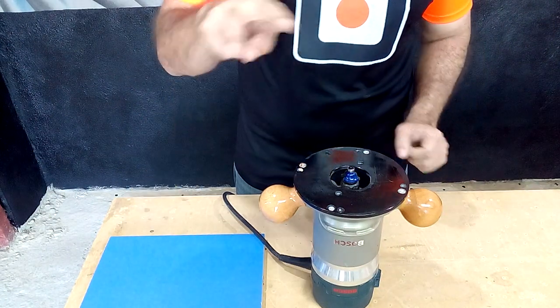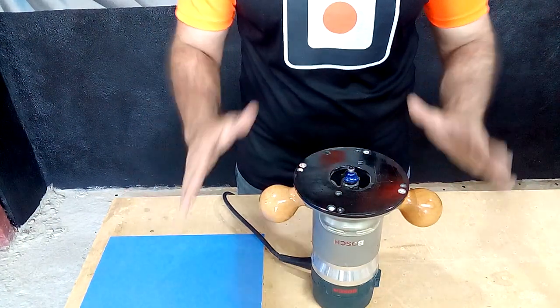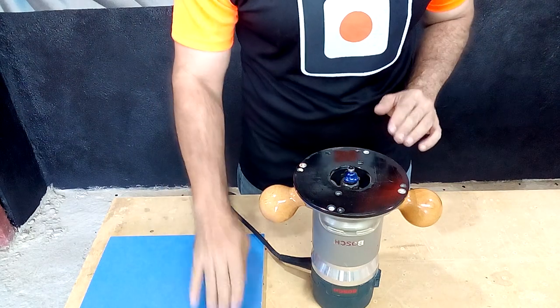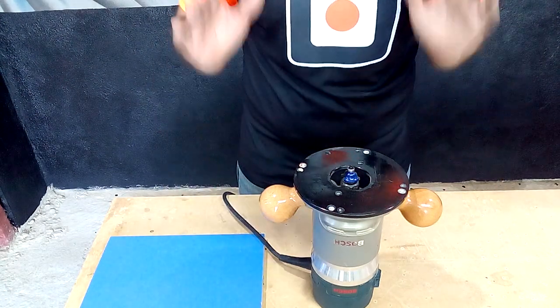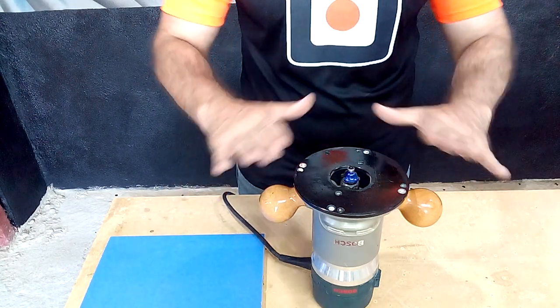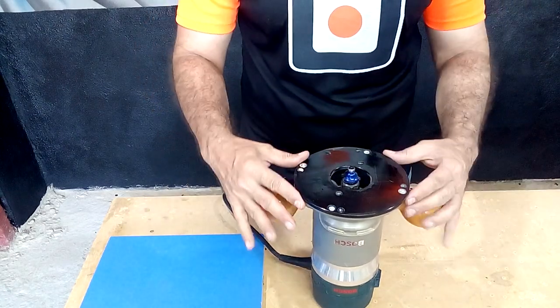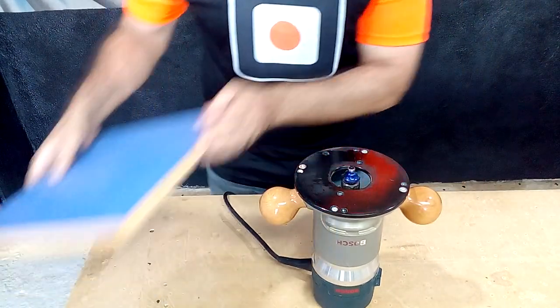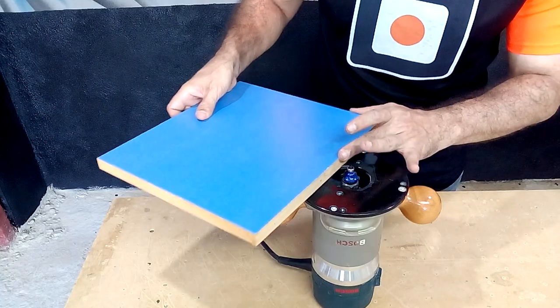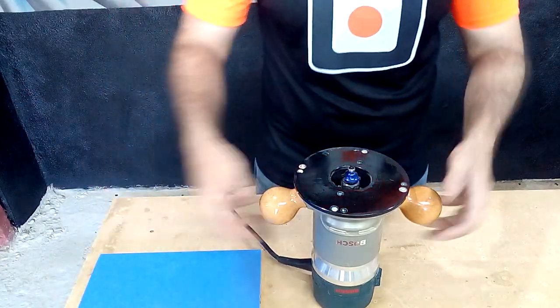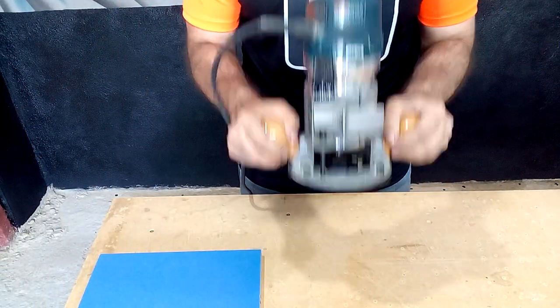When we make a grooving we must consider two factors: the router and the piece that we are going to work on. If the router is attached to a table, we will move the piece of wood or MDF that we are going to work. If we move the router with our hands, the piece must be attached to our workbench.